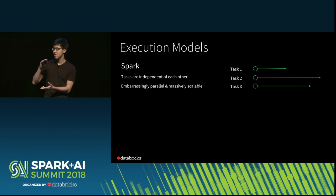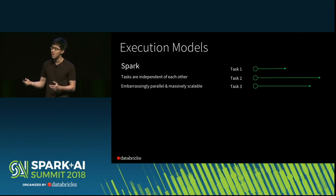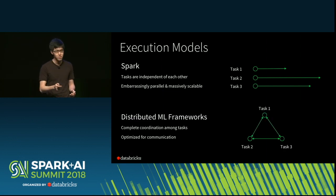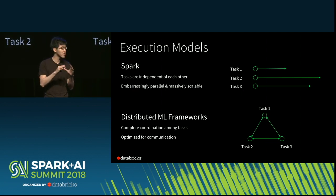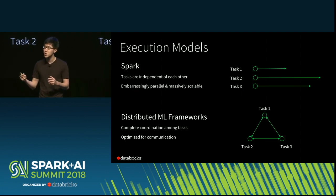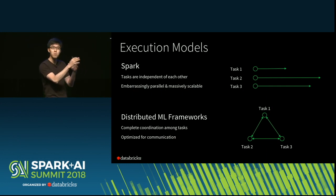The way Spark works is that each job is divided into a number of tasks, and the tasks are assumed to be completely independent of each other. This is what we call embarrassingly parallel — a massively scalable way of doing data processing that can scale up to petabytes of data. The way a lot of distributed machine learning frameworks work in their training process — sometimes using MPI, sometimes custom RPCs — is that they assume complete coordination and dependency among the tasks. This pattern is optimized for constant communication, rather than for large-scale data processing at petabyte scale.